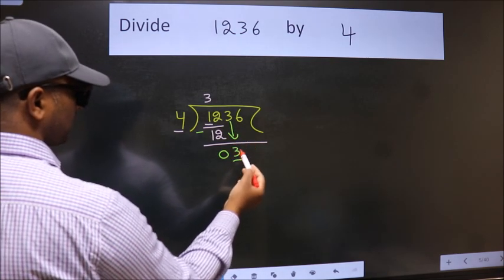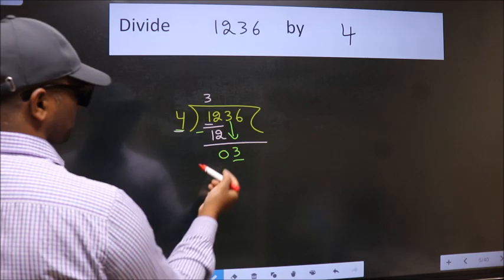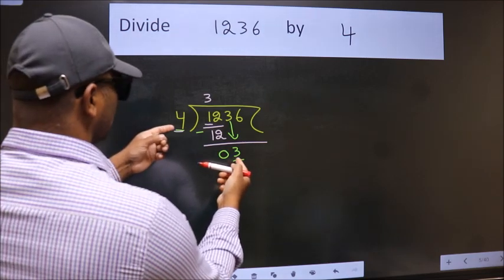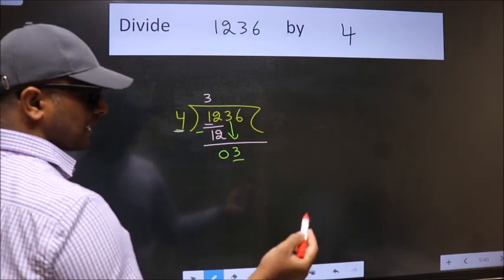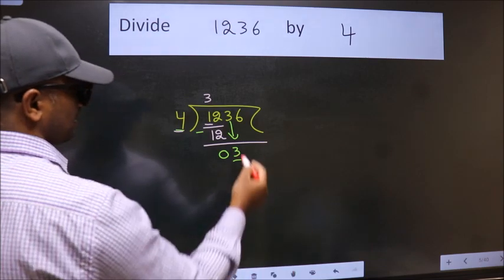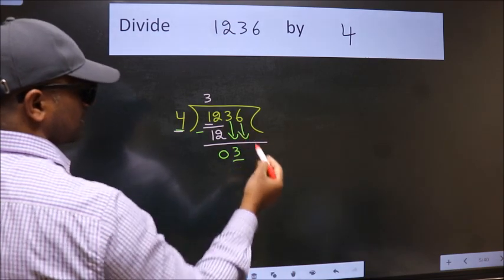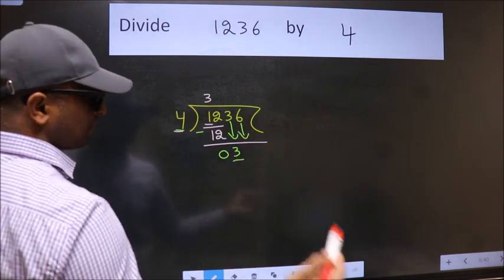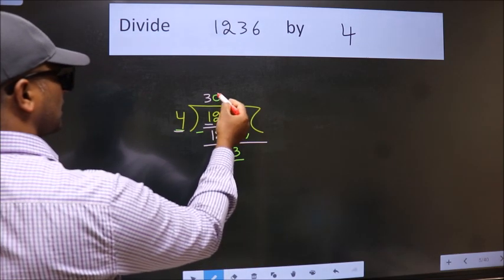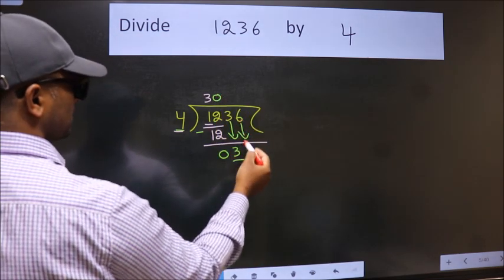Now, here we have 3. Here 4. 3 is smaller than 4. So, we should bring down the second number. And the rule to bring down the second number is put 0 here. Then only we can bring this number down.